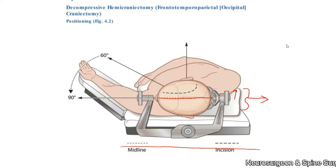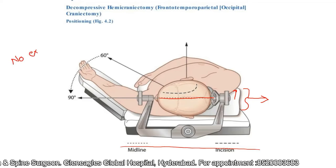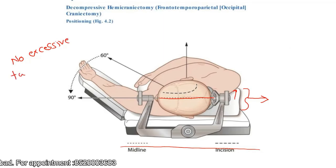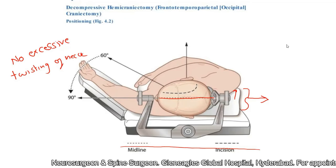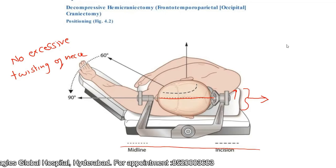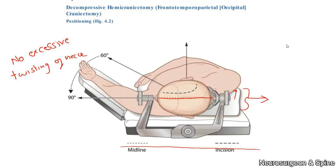While achieving this rotation of 90 degrees, ensure that there is no excessive twisting of the neck. This is for obvious reasons: if the patient has cervical spondylosis or canal stenosis, it can cause neurological deficit. More than that, if there is compression on the jugular vein, it will cause excessive bleeding during surgery. So you must ensure there is no excessive twisting of the neck.